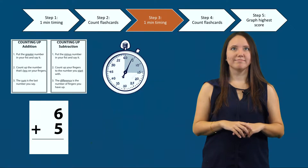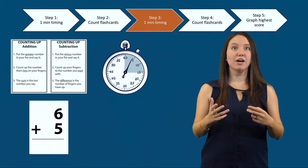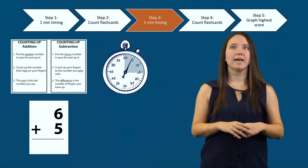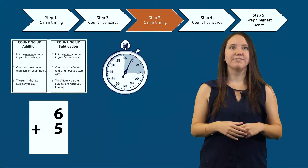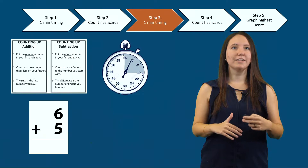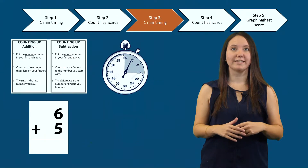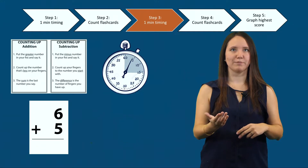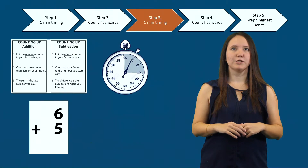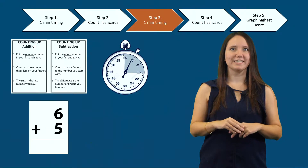Step three is a second one-minute timing. The second trial follows the same procedure as step one. The teacher sets the timer for one minute, says go, and the student answers as many flashcards correctly as possible. The teacher holds up one card at a time, places correct answers in the discard pile, and assists with incorrect answers using the counting up strategies. If a student struggles, the teacher can direct them to the counting up poster. Again, if you're not familiar with counting up strategies, see the video linked in the description.